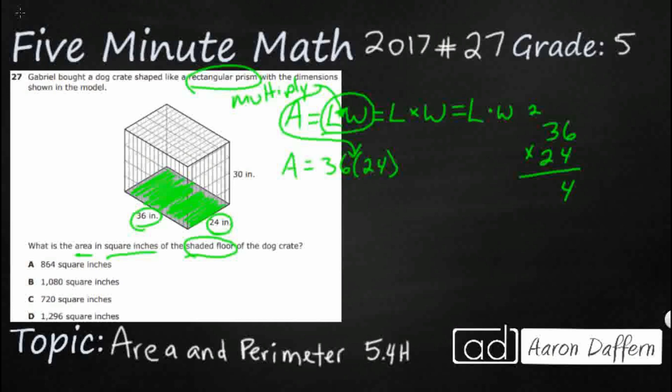And that's going to be 24. 4 times 3 is 12. Add the 2 back in and I've got 144. Second row is going to be 12. That's 6. That's 7. So I've got 864.